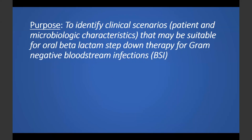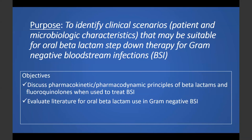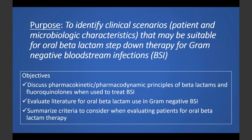The presentation will be split into three sections. The first section will discuss the pharmacokinetics and pharmacodynamics of beta-lactams when treating bloodstream infections — essential for considering whether we'd expect an antibiotic to be effective. The second section will evaluate primary literature for oral beta-lactams in gram-negative bloodstream infections, including retrospective studies and a meta-analysis. And the third section will bring it all together, summarizing criteria to consider when evaluating patients for oral beta-lactam therapy.